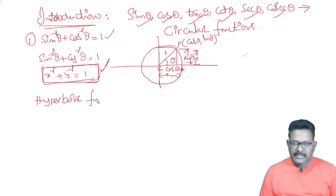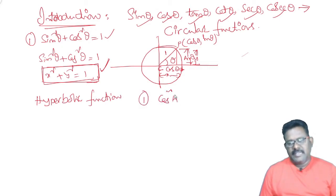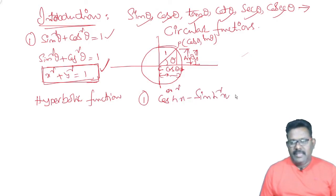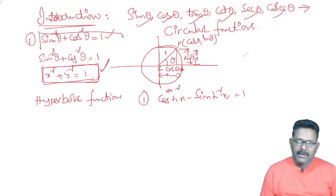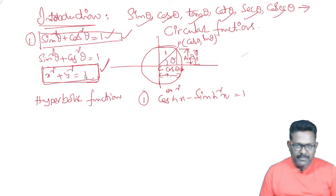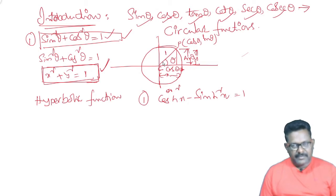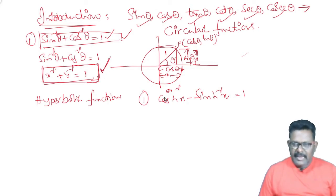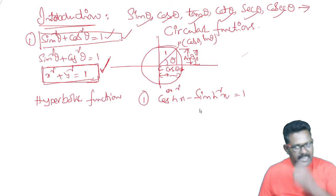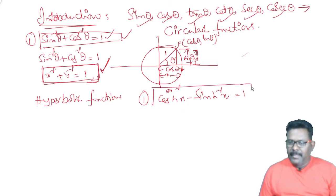I start hyperbolic functions. The hyperbolic functions identity is: cosh squared x minus sinh squared x equals 1. This is the first identity, analogous to the circular functions identity x squared plus y squared equals 1. This is a circular function identity.